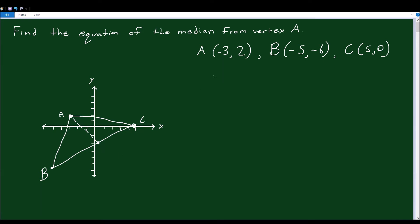So if they had asked us to find the equation of the median from vertex B, then we would have gone from B to the midpoint of AC. So they could have asked us that for any vertex, but they asked us for A.